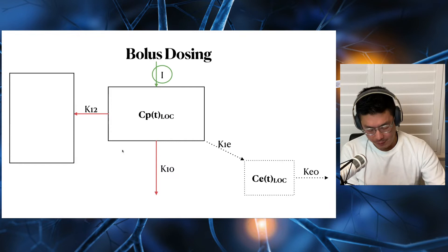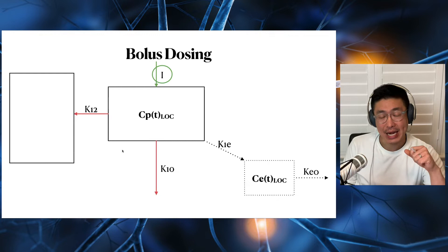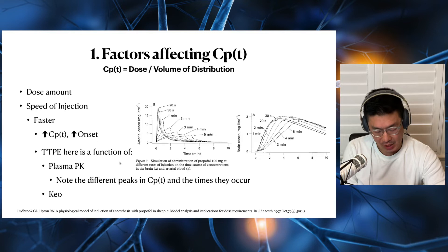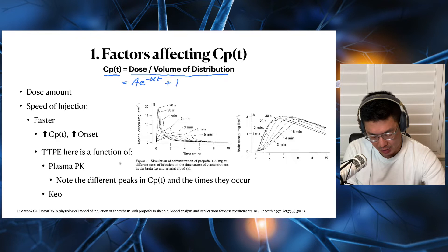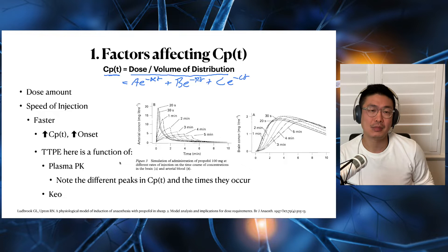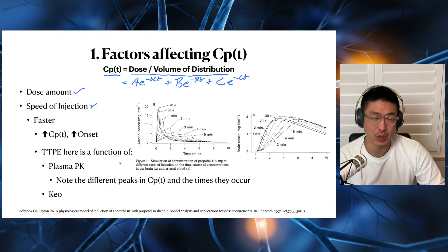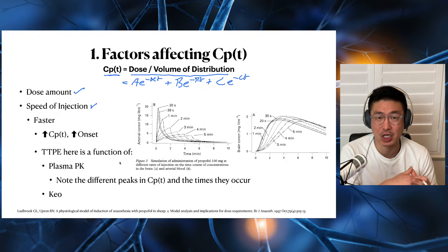Starting with dose — specifically how it is being delivered and what is being delivered — this is for bolus dosing. Plasma concentration equals dose divided by volume of distribution, and can also be defined as a poly-exponential function. Factors affecting plasma concentration include dose amount and speed of injection: the faster you give your set dose, the faster the rate of rise for plasma concentration, and you should get onset quicker.